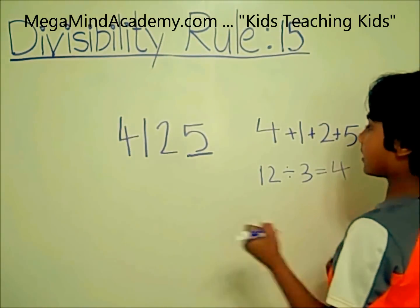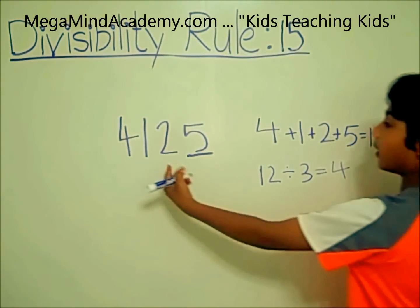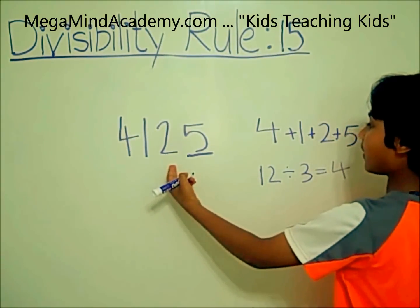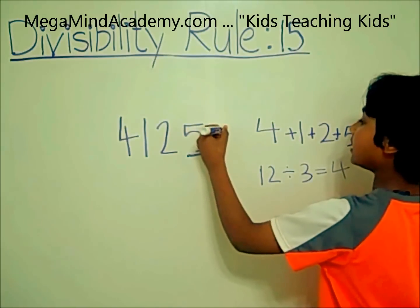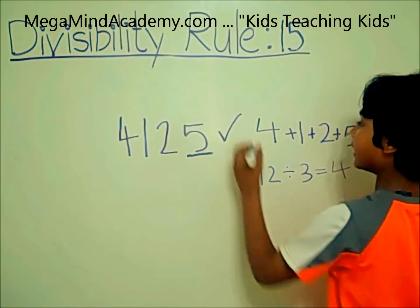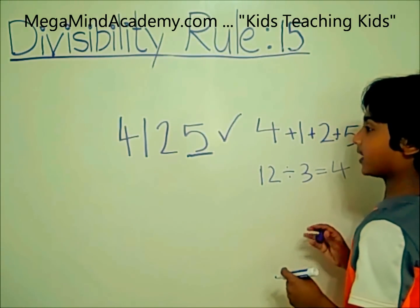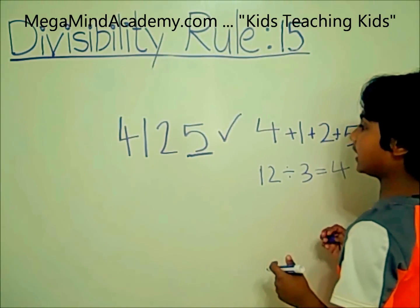12 divided by 3 equals 4 without any remainders. So that means 4125 is divisible by 5 and 3, which means it's also divisible by 15.